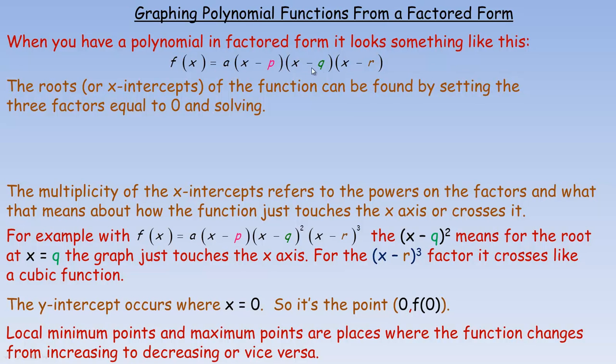When you have a factored form, it looks something like this: f(x) or whatever the name of the function is, equals, and there could be a constant out front. That's what a refers to. And I've given three factors here: x minus p, x minus q, x minus r. There could be less, maybe only a couple of factors or even one, or there could be more.